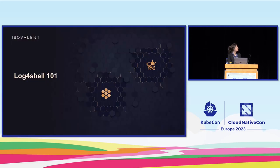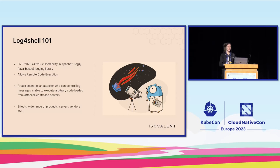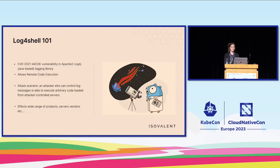So let's start with a quick one-on-one. What is Log4Shell? It's a vulnerability in a Java logging library licensed by Apache 2, and it allows remote code execution. Basically, an attacker who can control the log messages going into a vulnerable application would be able to execute arbitrary code. Of course, it affects a wide range of products, servers, and vendors.